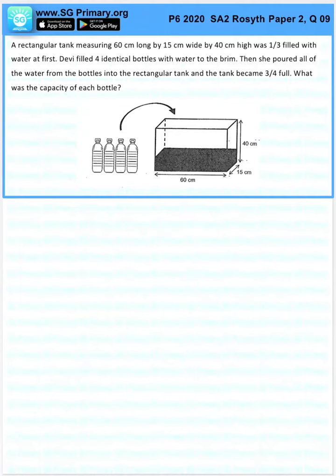So let's find the tank when it was one-third filled with water. So here, 60 times 15 times 40 times one-third will give us 12,000 cm³.